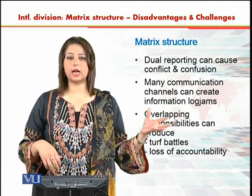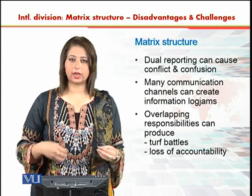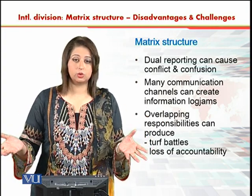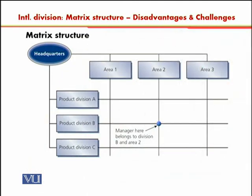Obviously, if one boss wants to go in one direction and the other boss wants to go in another, you will be totally confused about what to do. As you can see in this diagram, the manager with the blue dot is someone who is reporting to area manager number two and to product division B manager as well. So this person is responsible for dual reporting to both of these people.